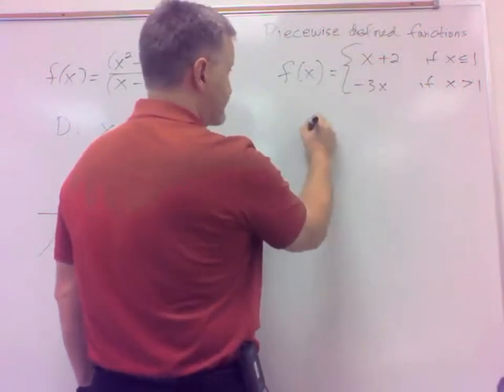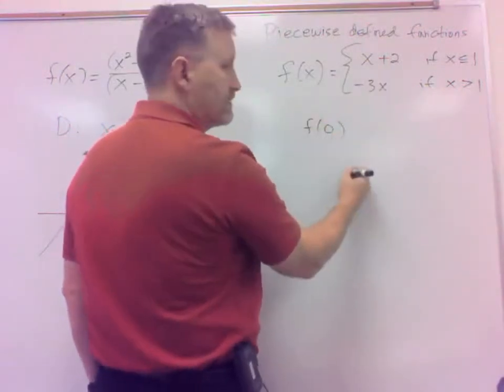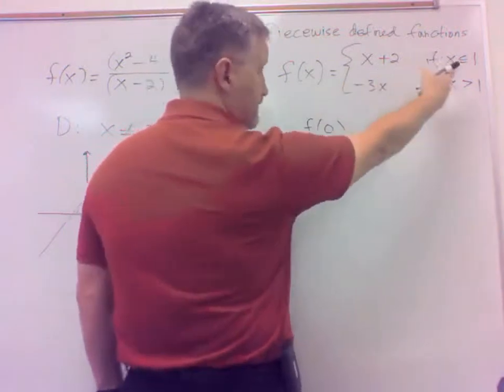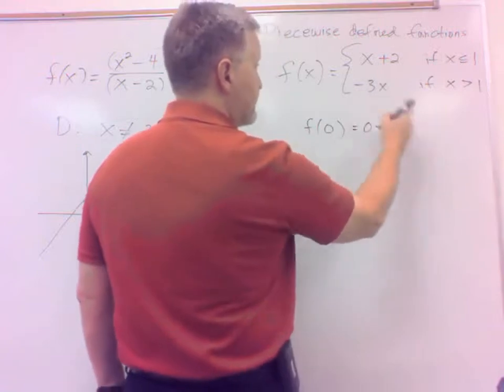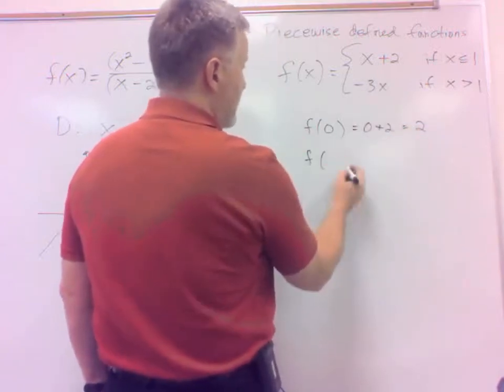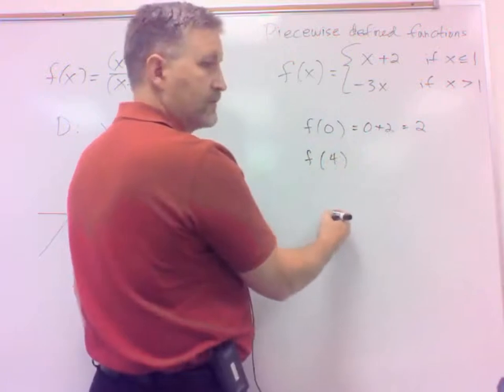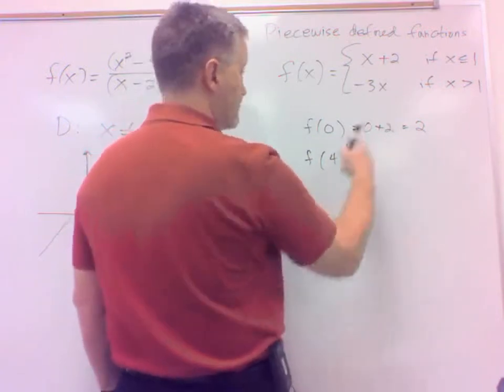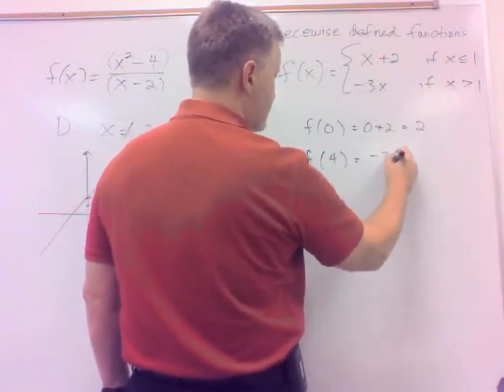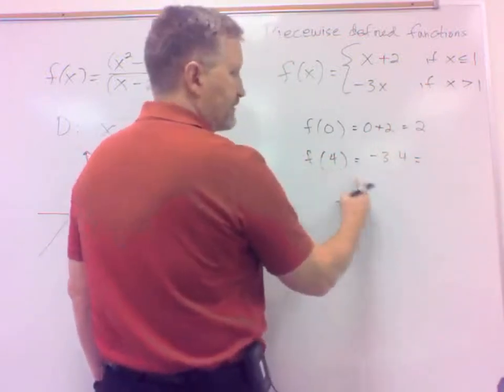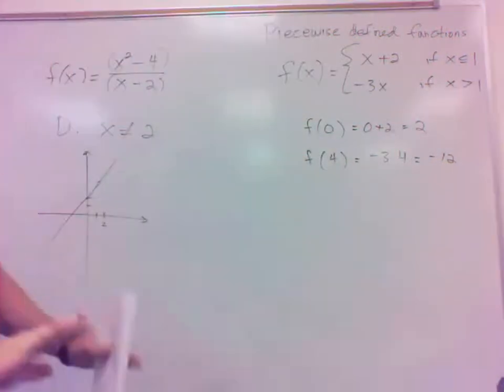So if I do f of 0, I use the top, right? Because 0's, that's their x value, it's less than 1, so I go with 0 plus 2 then, which is 2. If I have a value like 4, which one do I use there? Well, that x value is greater than 1, so I use the second piece. Negative 3 times x would be negative 3 times the input is negative 12. And we'll sometimes have to do that, input those like that. I think, though, on this one, they actually want us to graph this.